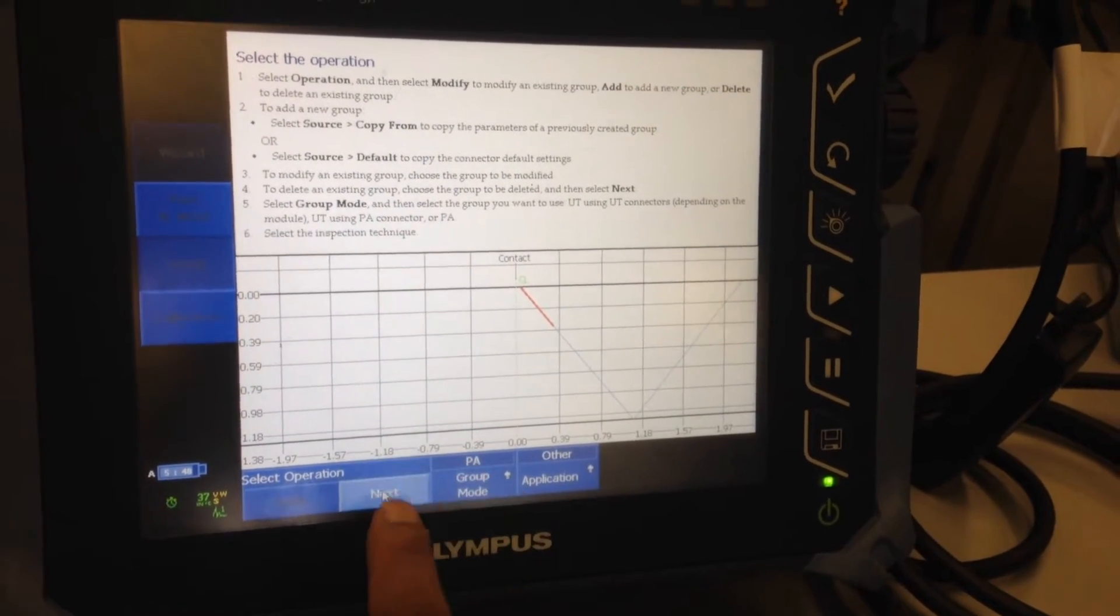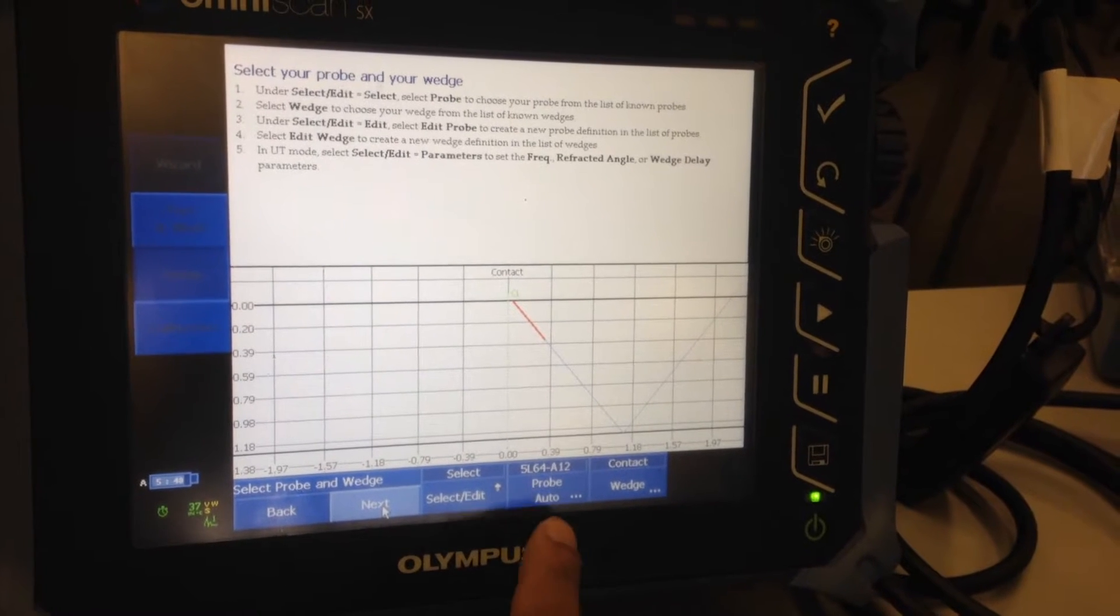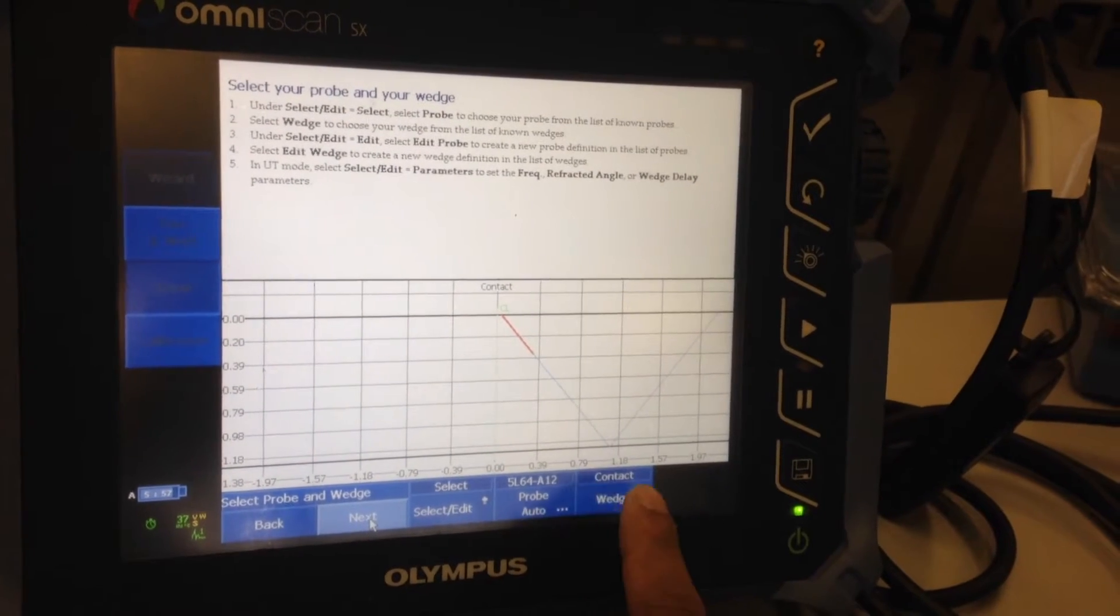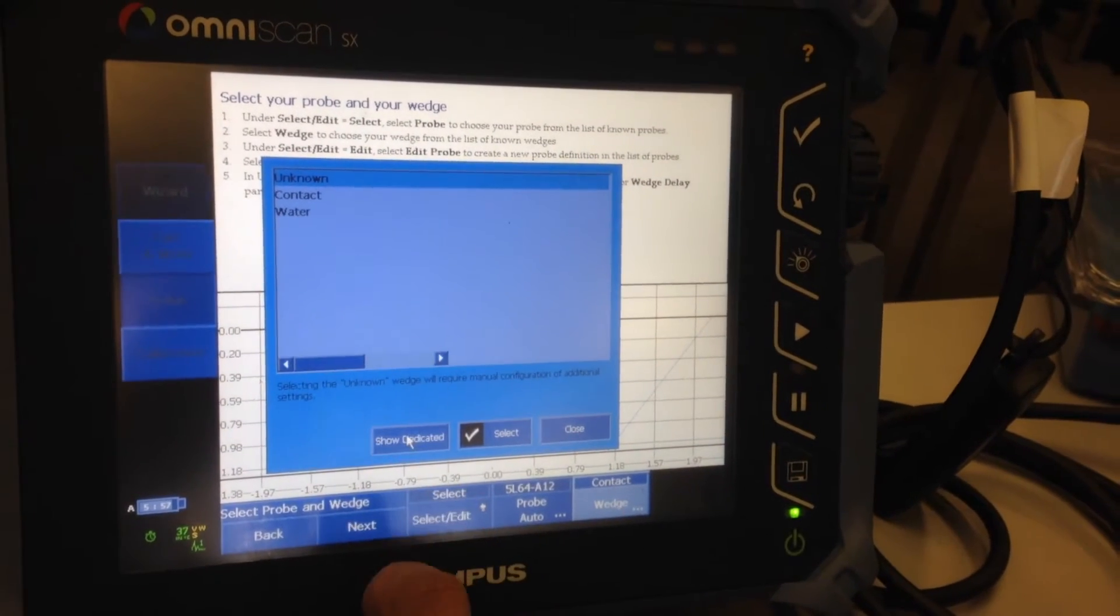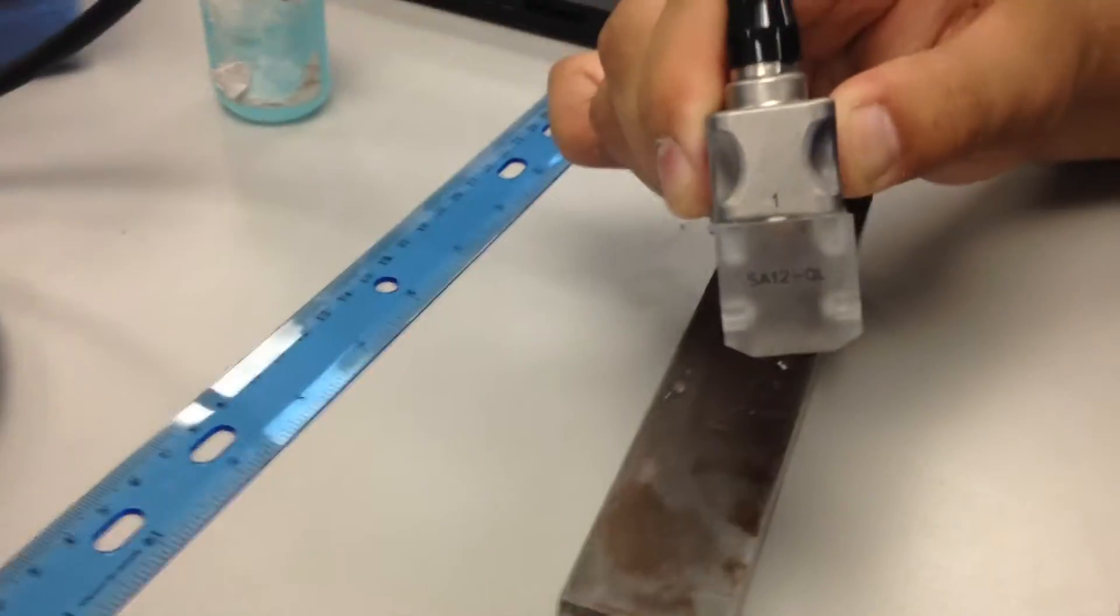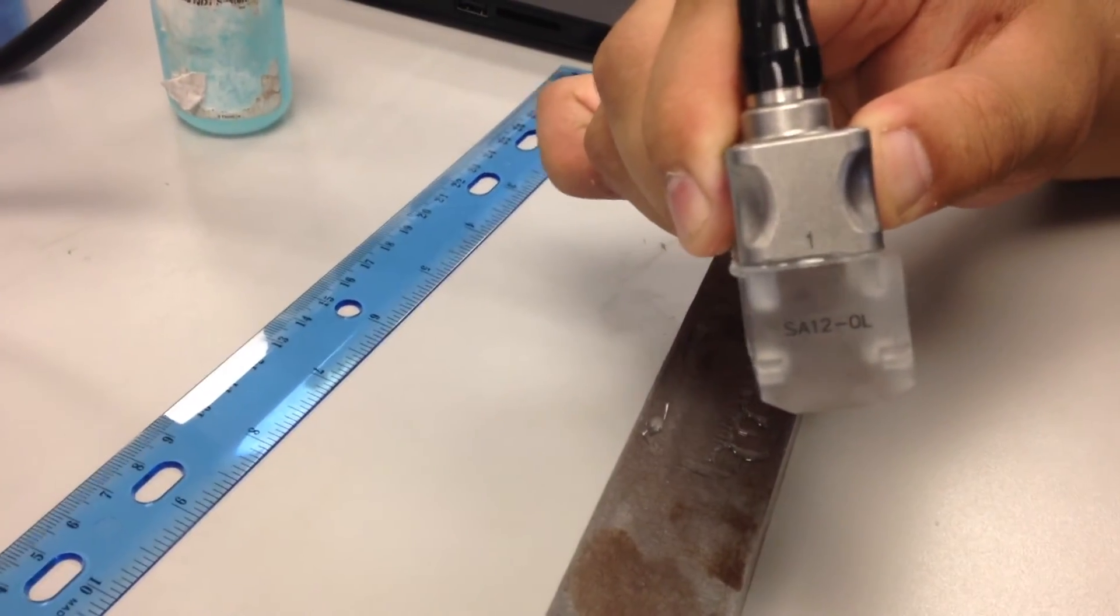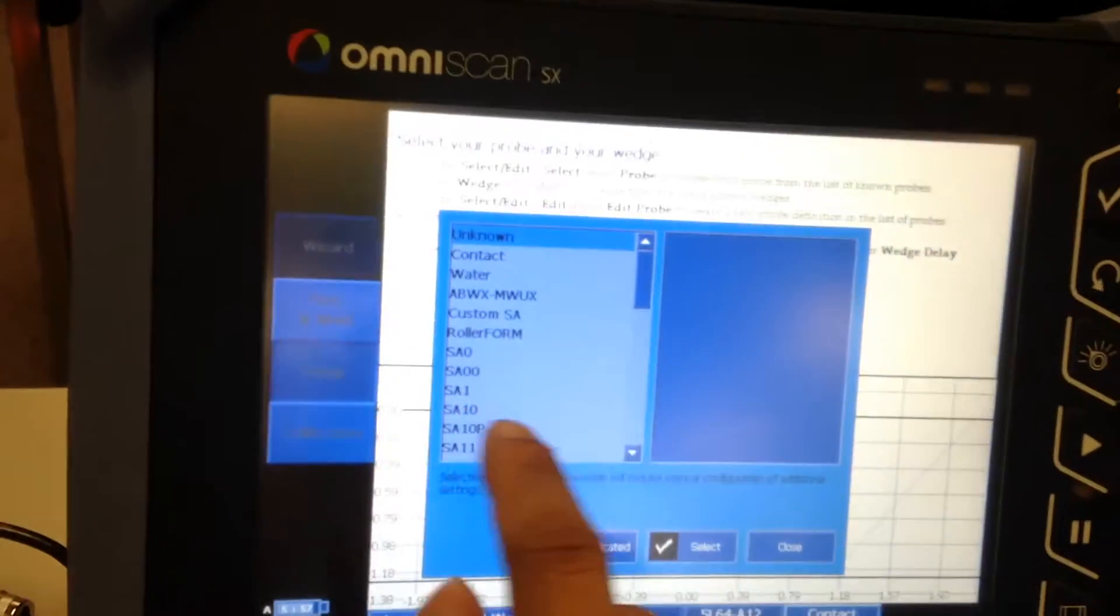Probe is auto-selected. Wedge, I click on show all so it opens up the library and read the numbers off of my wedge, which is SA12-0L. So I scroll down to SA12 and select 0L, which is zero-degree linear.